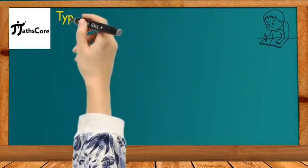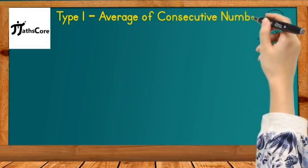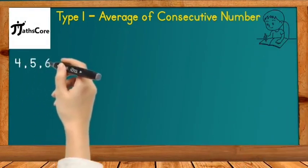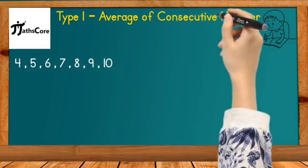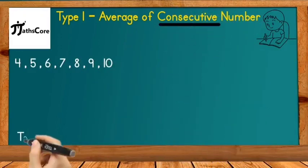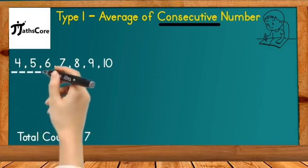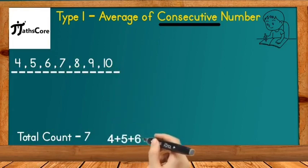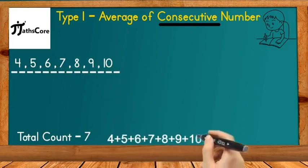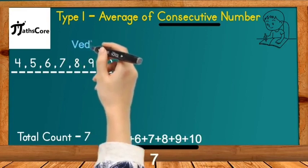Let us solve the first example on Type 1, that is average of consecutive numbers. The example is 4, 5, 6, 7, 8, 9, 10. In this example all numbers are consecutive and exactly 7 numbers are given. According to the definition of average, you need to add all these numbers together and divide by the total count which is 7, and then you will get the average.